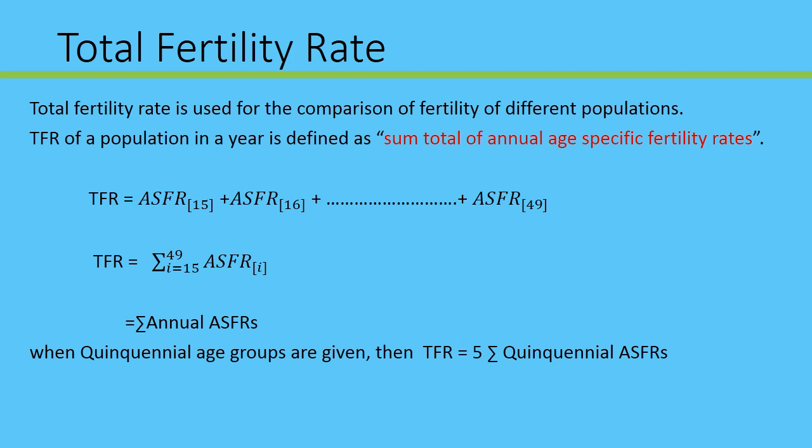Every age group will be counted. For age-specific fertility rate, for example, 15 to 19 years — you get a fertility rate. Next, the 20 to 24 age group — a fertility rate is obtained. In this case, every age group will have a fertility rate, and they will be completely added up to total 15 to 49 years. This gives the total fertility rate, which is used for comparing fertility for different populations.